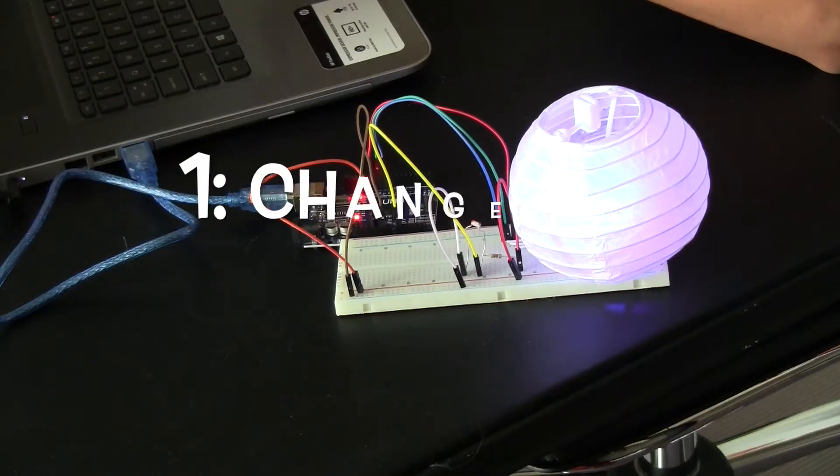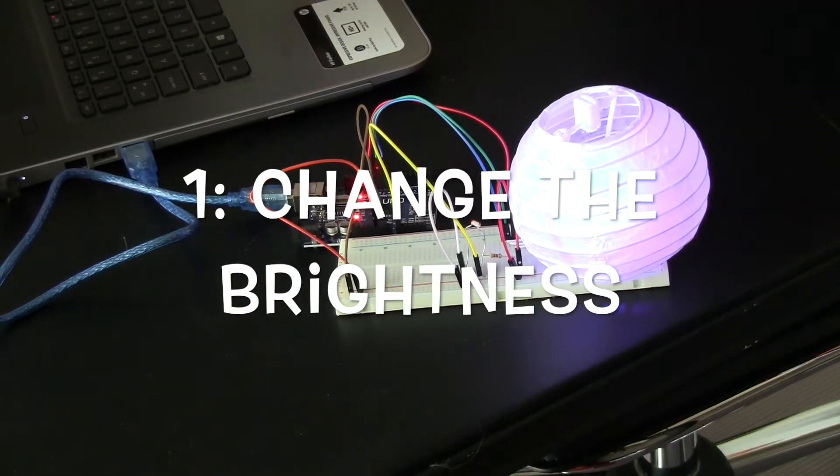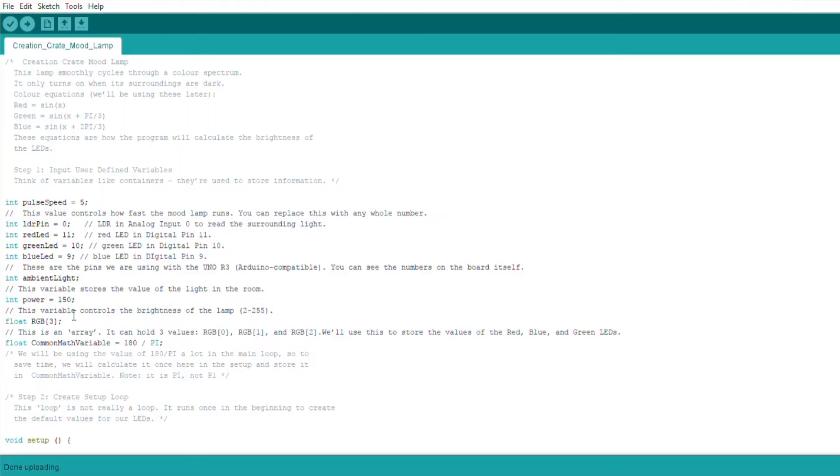What's really cool about Creation Crate is this isn't an exercise of just typing in some code and watching the lights light up. Trust me, that's really cool and we should be doing that. But I love these exercises in the back. Let's talk about the exercises. Question number one: let's start by changing the overall brightness of the mood lamp. We need to find the variable that controls this and change its value.